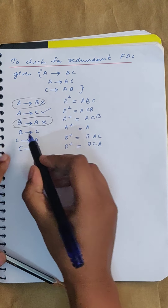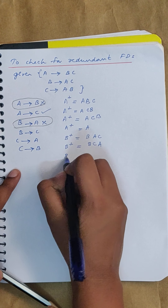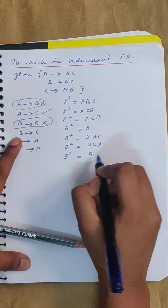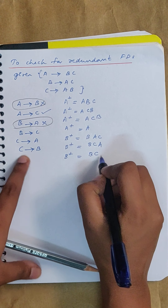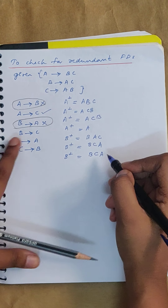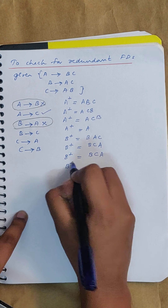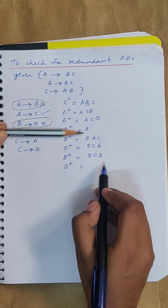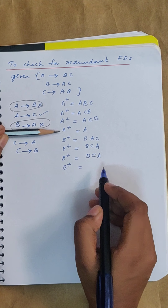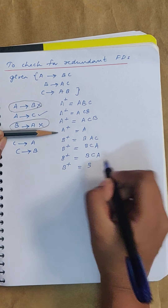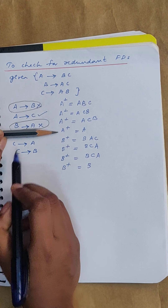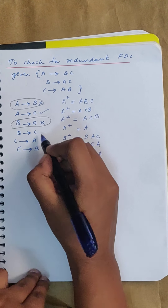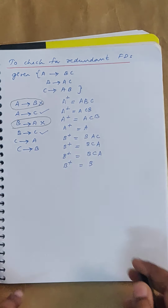Now check if B→C is redundant. Find B closure with it: you get B, C, then A — {B, C, A}. Without B→C, find B closure: you get only B. No left-hand side starts with B now, so B closure gives only {B}. Therefore B→C is an essential functional dependency.